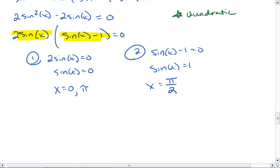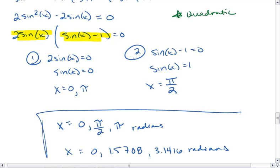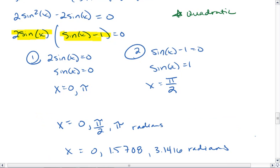And there are three solutions: 0, π/2, and π. Or if you prefer the decimals, we get 0, π/2 is about 1.5708, and π is about 3.1416. All in radians. Either solution is correct. It really doesn't matter which one you use.